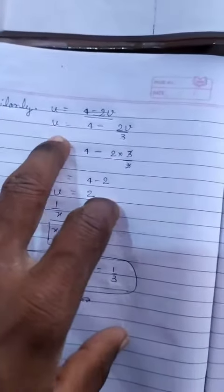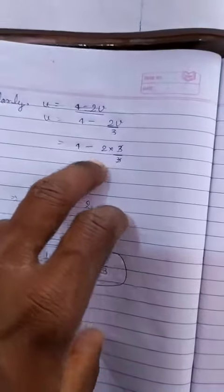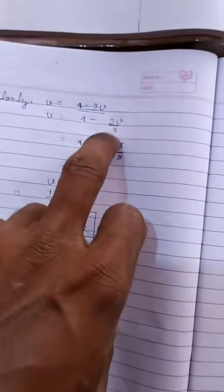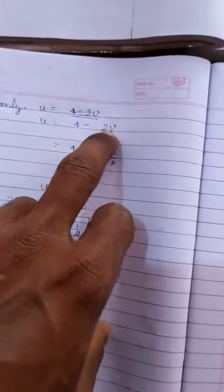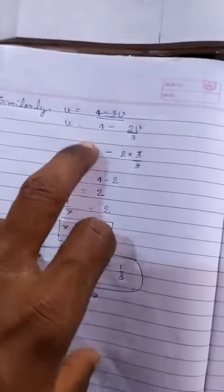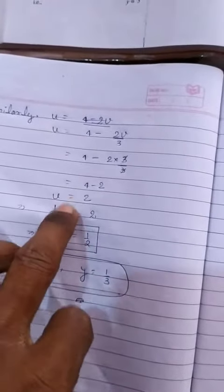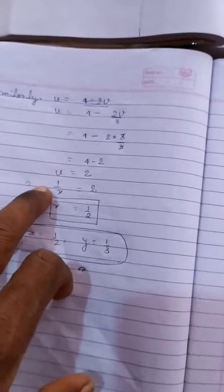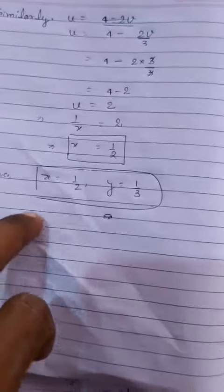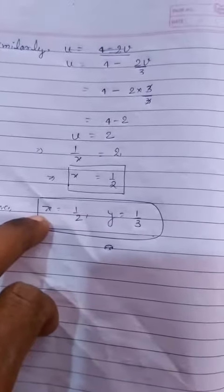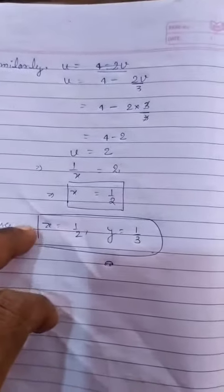Now u can be also derived. So 4 minus 2v upon 3. So we will put the value of v in the place in this equation. Thus we got u, and we know u is 1 upon x. So finally, we got the x also. So this is the way, and I hope you got the same.